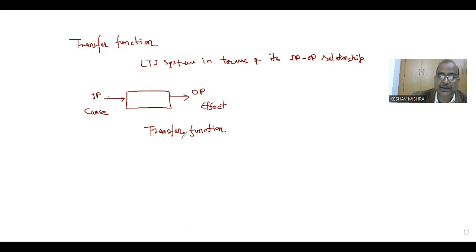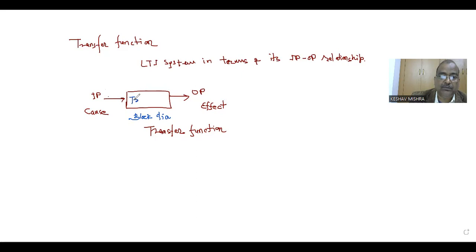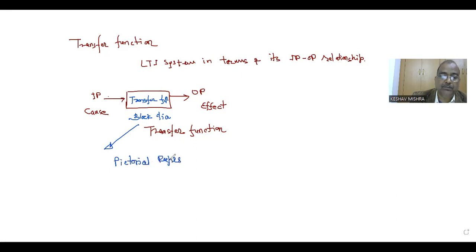We can represent the input and output relationship using a block diagram. This block diagram and the transfer operation together are recognized as the transfer function. This block diagram representation is basically a pictorial representation of a control system.